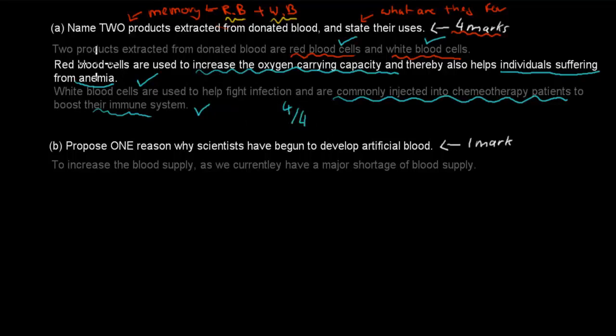So again, that's a very good question and you don't have to write much for four marks. And then the other part, B, propose one reason why scientists have begun to develop artificial blood. Now here we have to propose one reason.